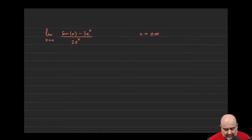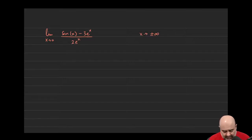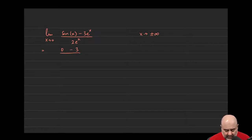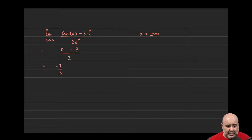With a question like this, all you have to do is just plug in 0 and see what happens. Sine of 0 is 0, so that just goes away. Minus 3 times e to the 0 would just be 3. e to the 0 would be 1. And then 2 times e to the 0 would be 2. And the answer would be negative 3 halves. Very simple question — if you think about it the wrong way, you might make a mistake.